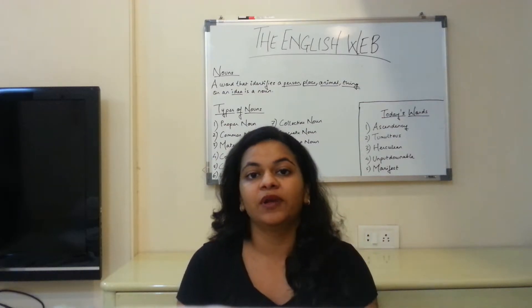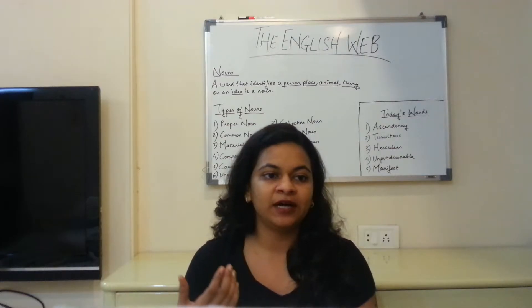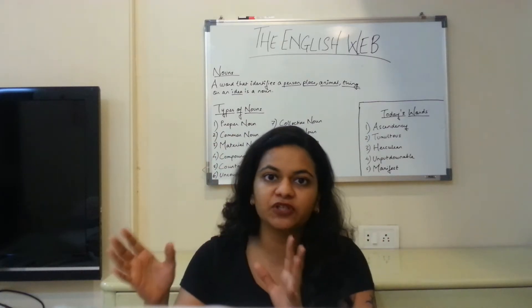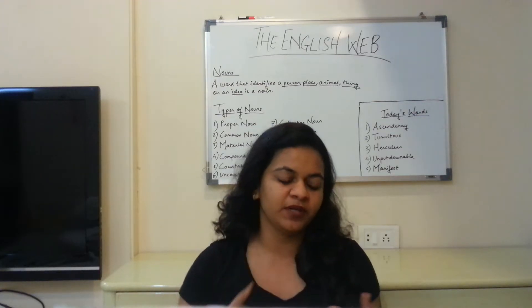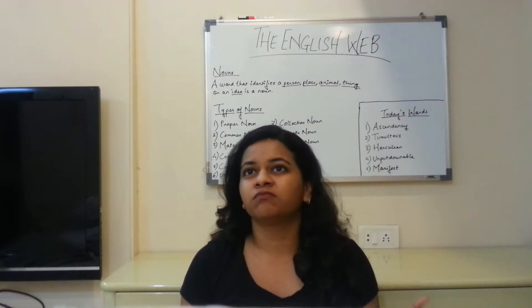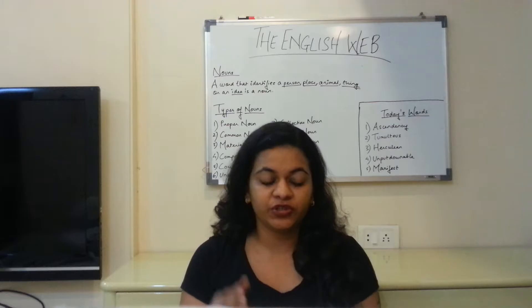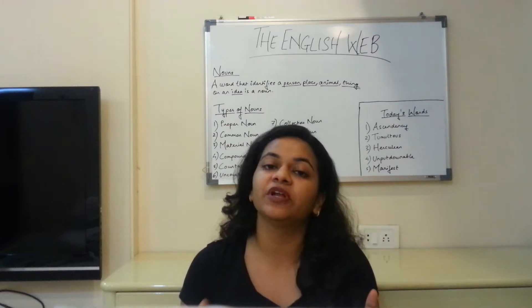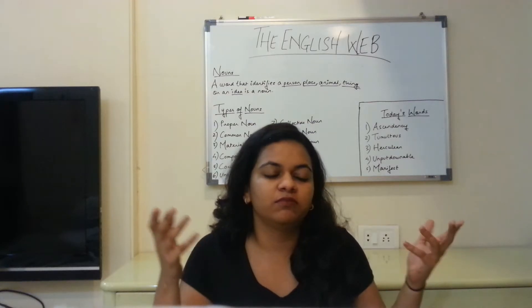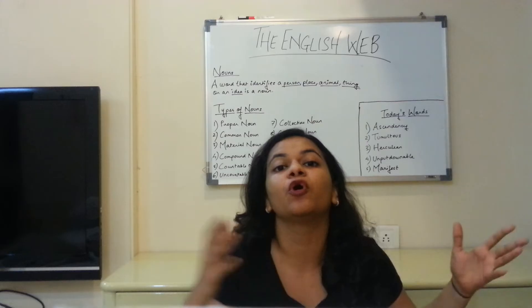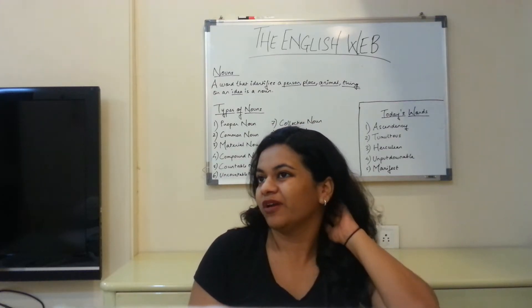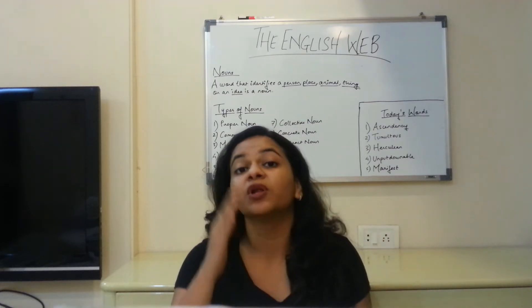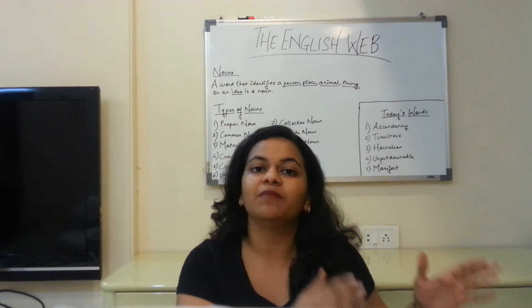The third type of noun is material noun. A material noun is a word that talks about a certain kind of material that things or substances are made from. For example, I could say 'I love wearing cotton dresses' — here cotton becomes an adjective, I am not talking about cotton specifically. But when I say 'the crop grown in this particular region is cotton,' cotton here is the material I am talking about. So in this context, cotton becomes a material noun.